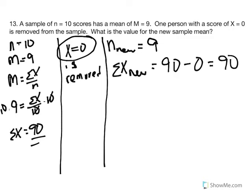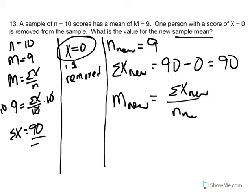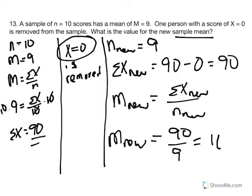The new mean equals the new sum of x over the new sample size: 90 over 9 equals 10. So the new mean is 10. We recognize that changing the sample size caused a change in the mean. In this case, since x was 0, there was no change in the sum of x, but the smaller denominator raised the mean.